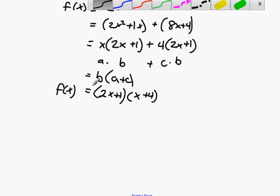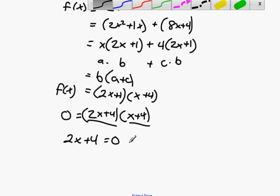Now, if we are trying to find the zeros, what do I do to this f of x? I assign it the value 0. So we have 2x plus 4 times x plus 4, and now I use the zero product rule. If 2x plus 4 times x plus 4 equals 0, then I know that 2x plus 4 equals 0 and or x plus 4 equals 0. We'll solve these two equations.